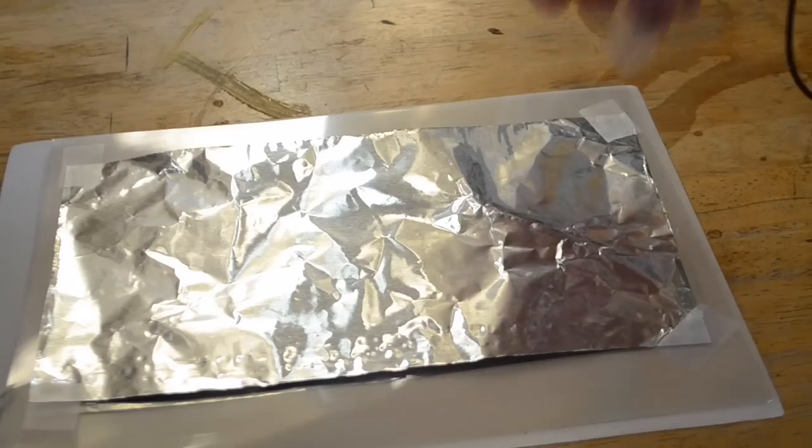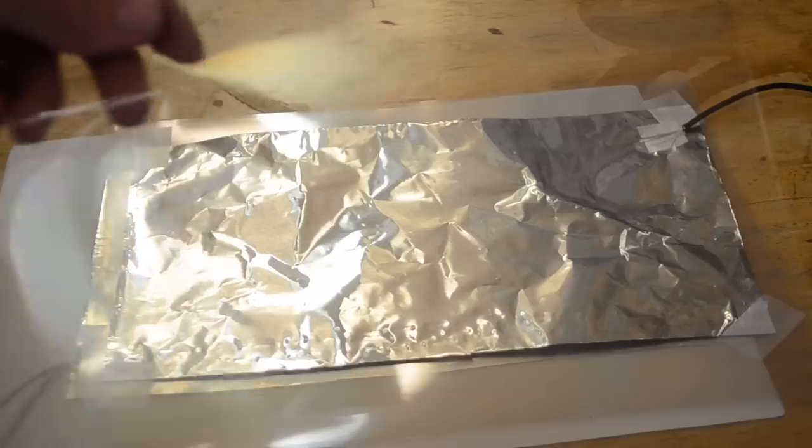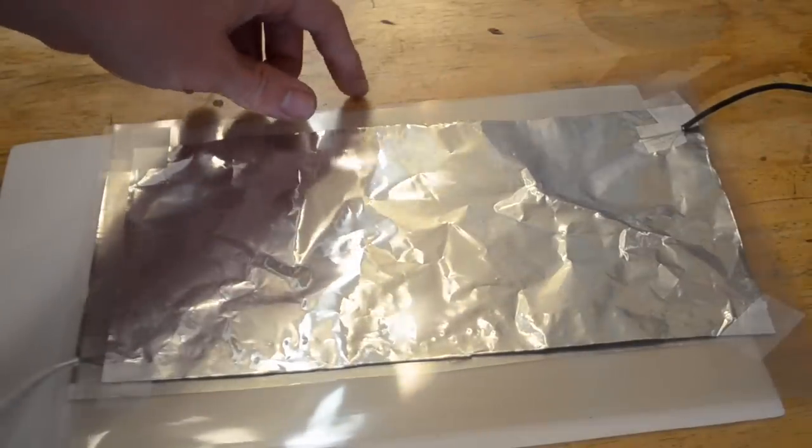Now take another wire and tape it into contact with the foil. Be sure that it's on the opposite corner from the last one you did. Now I'm going to take another sheet and place it on top to finish it off. And go ahead and flatten it out as best you can again.